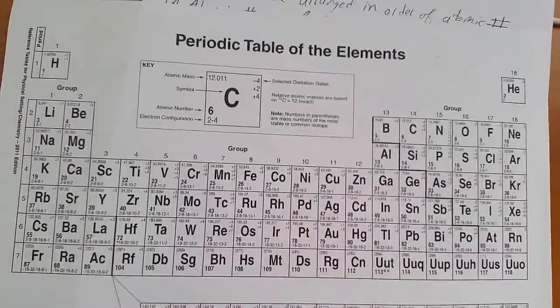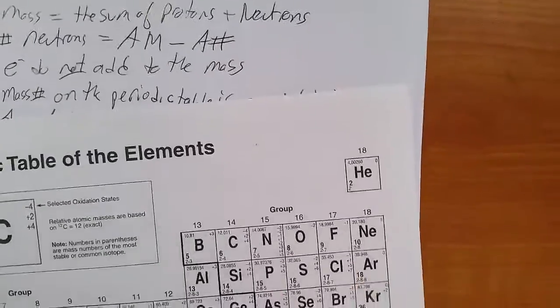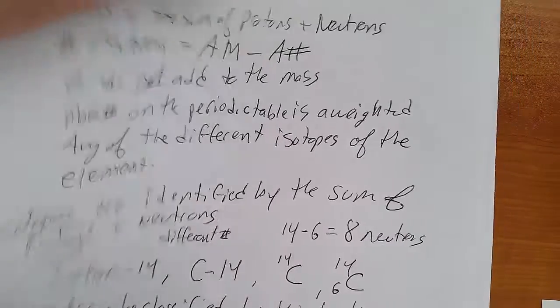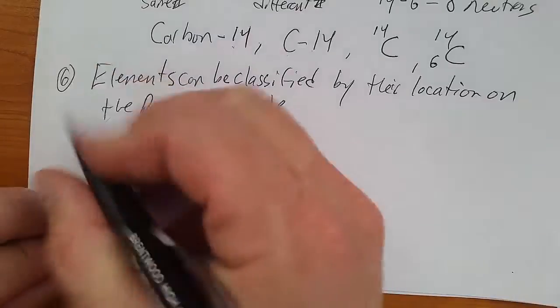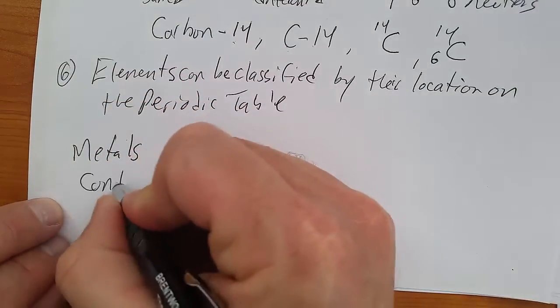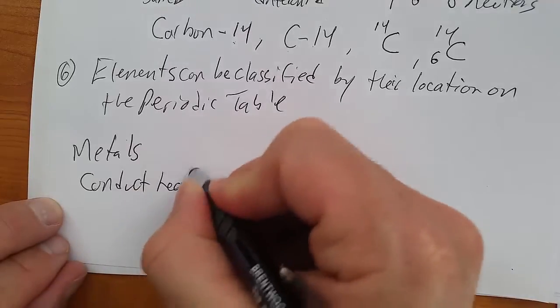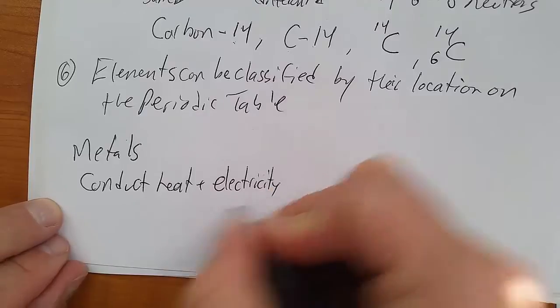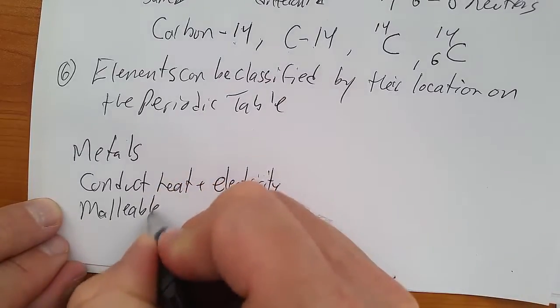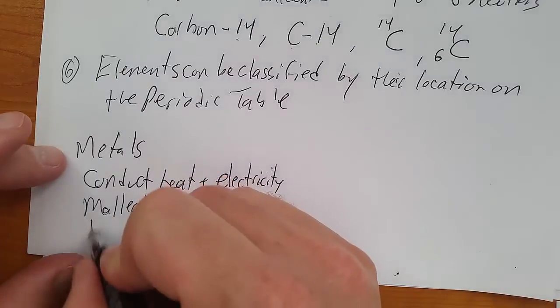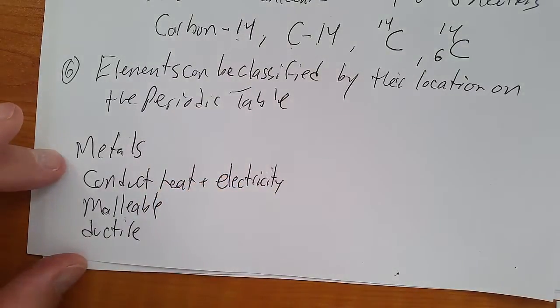Properties of metals. Metals conduct heat and electricity. They're malleable. Means if you hit them with a hammer they'll bend. Ductile. They can be drawn into a wire.